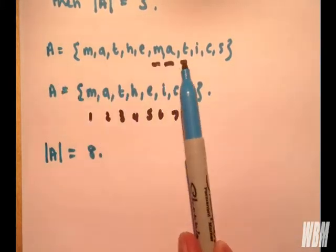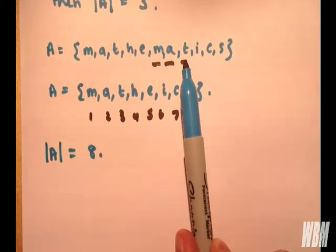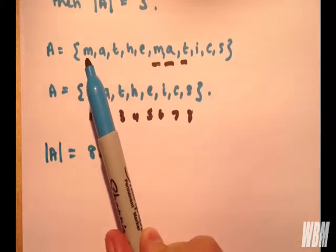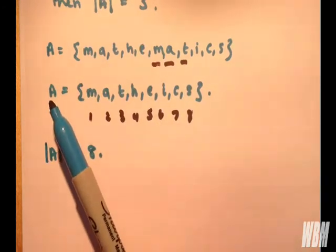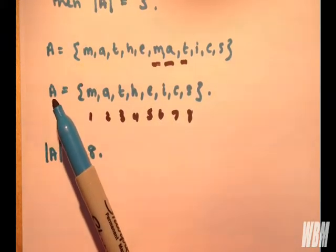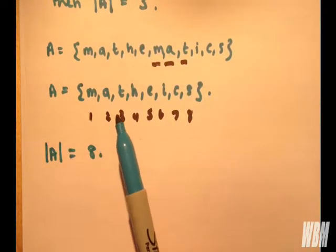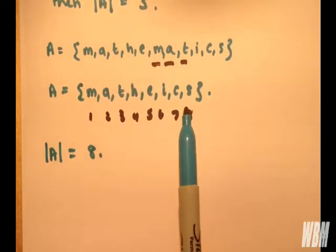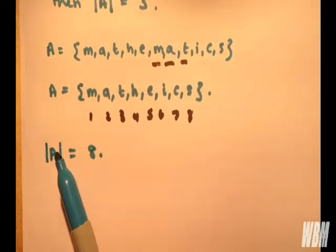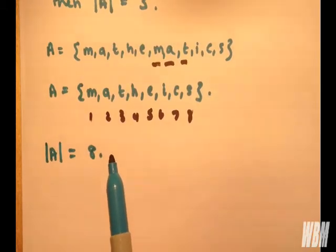We finished counting and found there were 3 repetitions in the set of letters in 'mathematics'. So we rewrite set A without the repetitions, count the number of elements or members of set A, and there are 8. So we can write that the order or cardinality of set A is equal to 8.